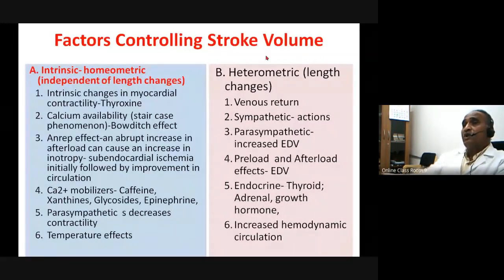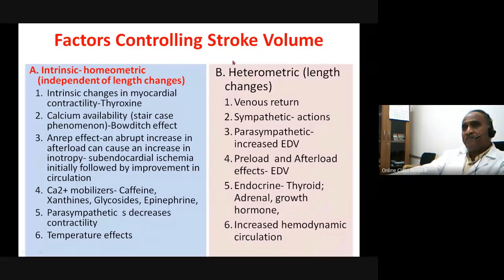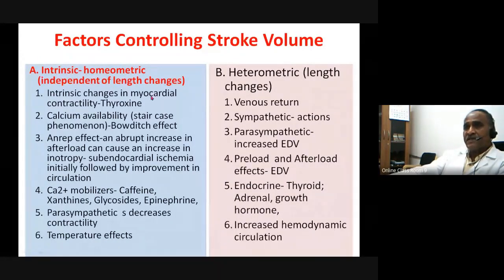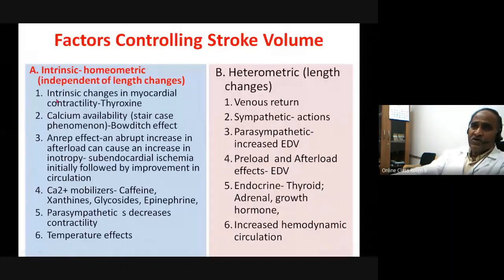Now considering stroke volume: there are two regulatory factors. Factor A is homeometric — independent of length changes — and factor B is heterometric, associated with length changes. Homeometric regulations are due to intrinsic changes in myocardial contractility. One such hormone is thyroxine. Excitation-contraction coupling also plays a role.